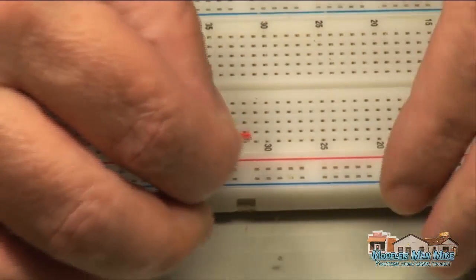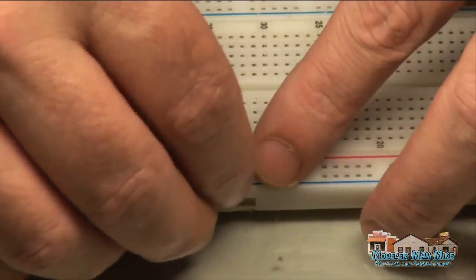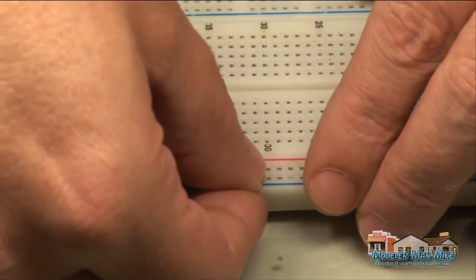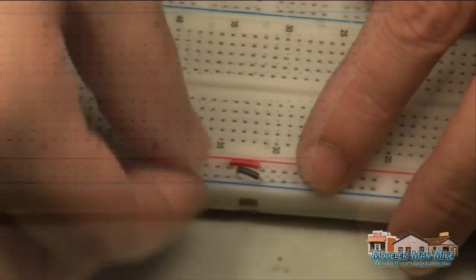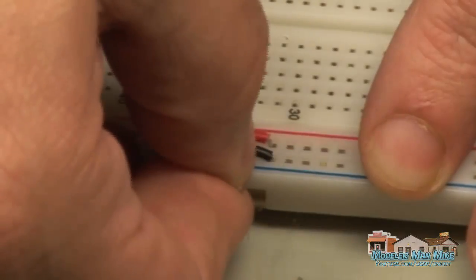On this 830 count breadboard I have to bridge the centers. They are isolated, two different sides. So I run these wires in here to bridge the two halves.